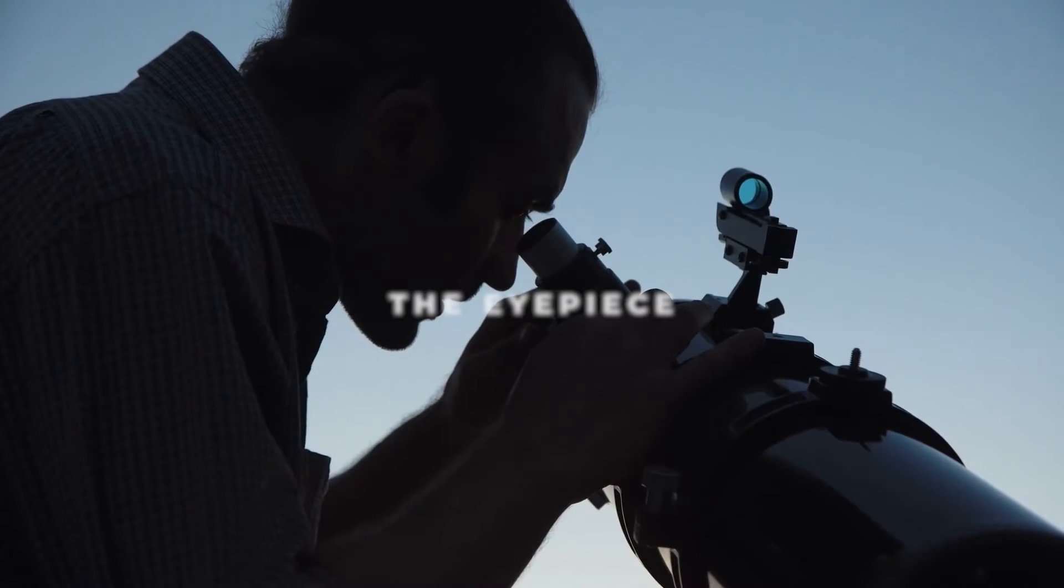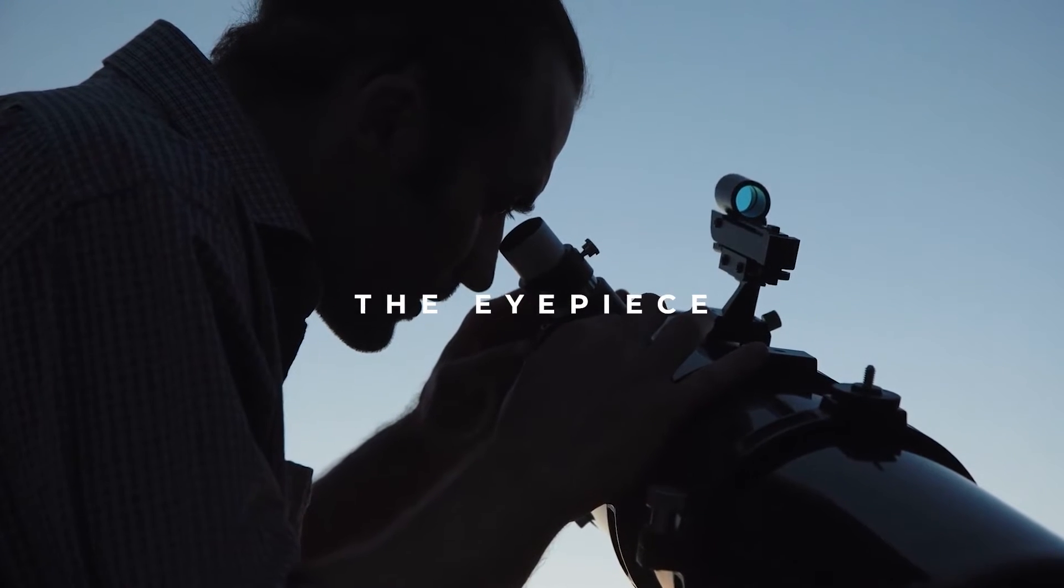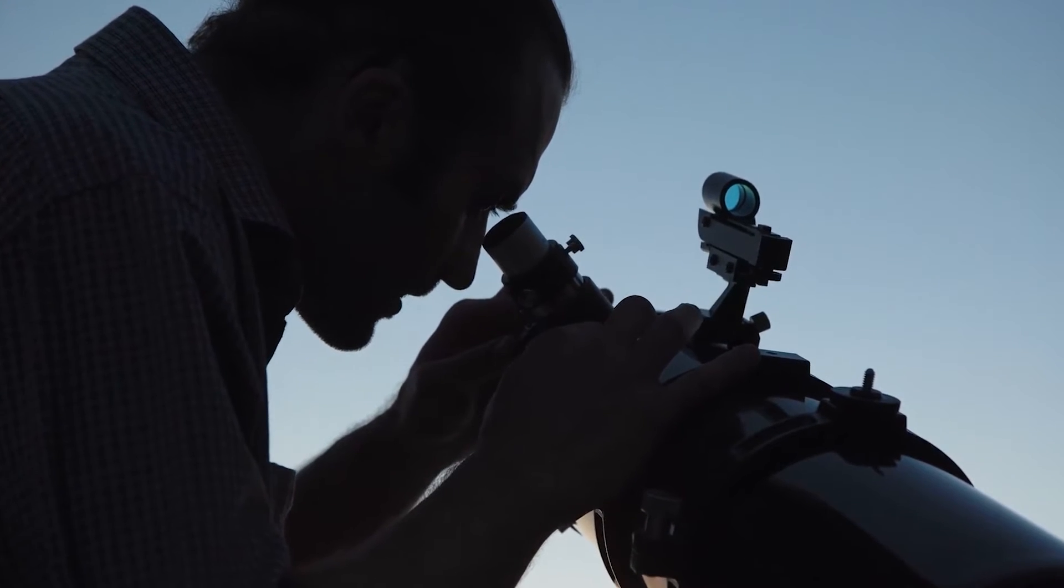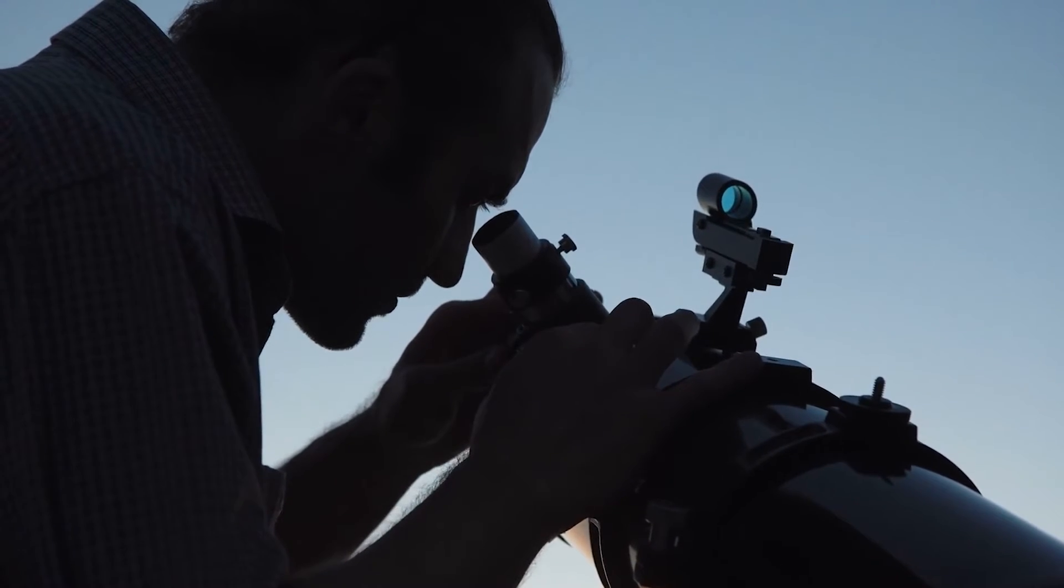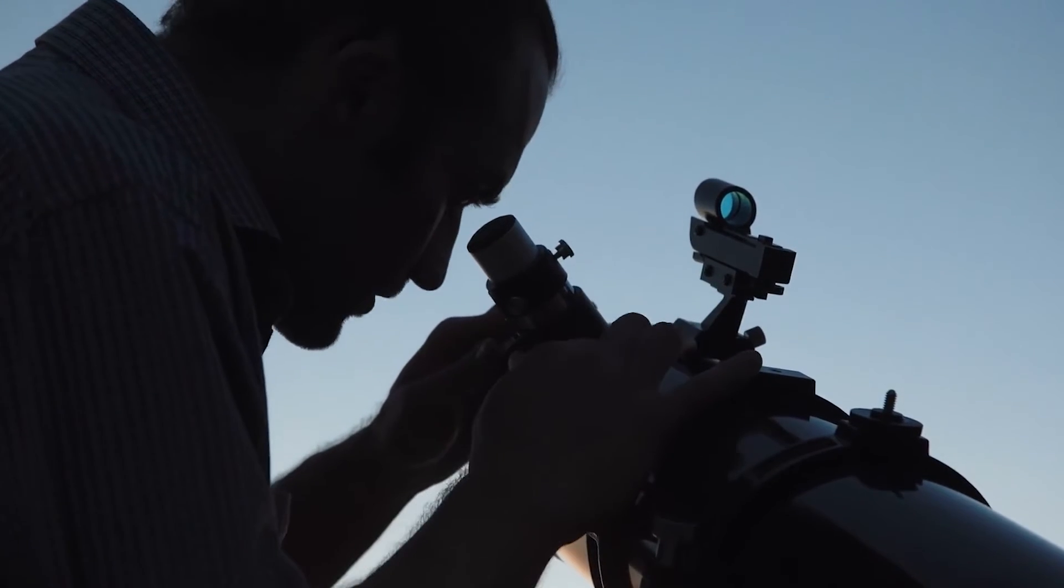The eyepiece is then used to observe the magnified image. The eyepiece is a convex lens that acts like a magnifying glass and makes the image larger.